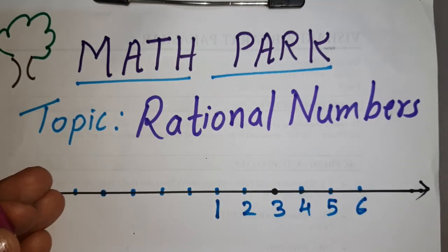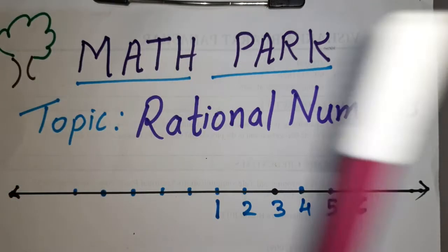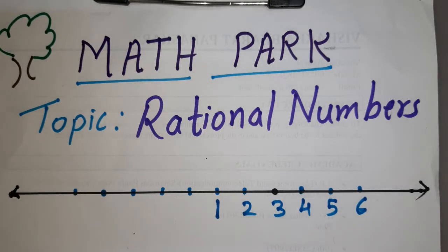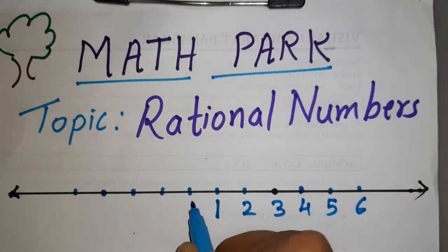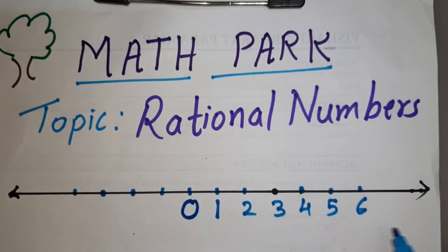We can represent natural numbers on the number line: one, two, three, four, five, six — it goes on infinitely. Now if this one is also taken away, nothing is left. So how do we represent nothing? Nothing is zero. This is how we represent zero on the number line, and zero, one, two, three, four, five, six onwards — these are called whole numbers.